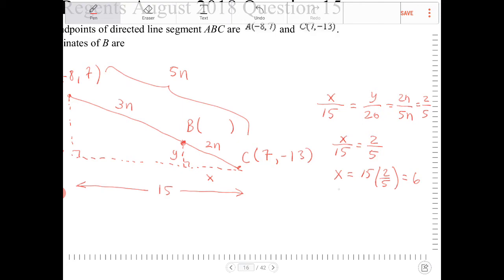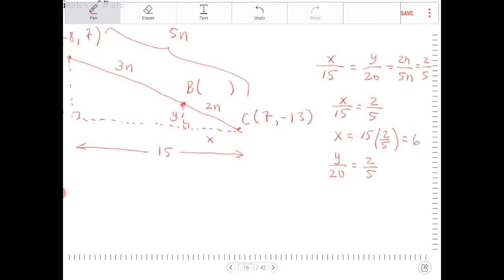I want to do the same thing with the y variable. So y over 20 is equal to 2 fifths. Cross-multiply both sides by 20. I get y is equal to 8.